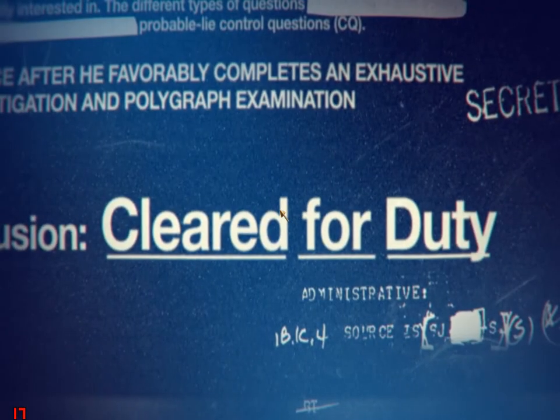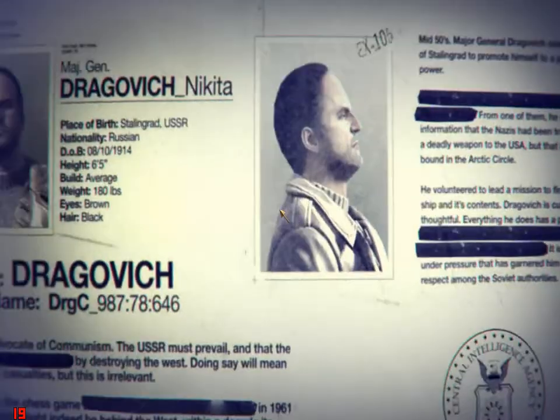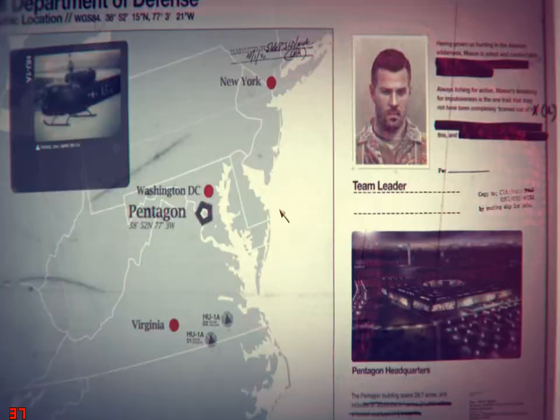Victor Reznov was a communist. How did the CIA know you weren't compromised? They tested me. They knew I wouldn't break, and I won't break now. The government wanted Dragovich. They wanted you to kill him. Yeah. And there were others. Others I was supposed to kill.